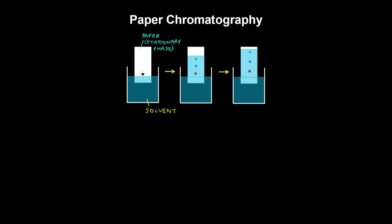For example, there's a black ink dot that's composed of a mixture of several covalent substances, and the paper is dabbed in water with the substance slightly above the water. The solvent travels up the paper by capillary action, and as the solvent front moves upwards, the separated substances appear and they keep travelling further with the movement of the solvent front.